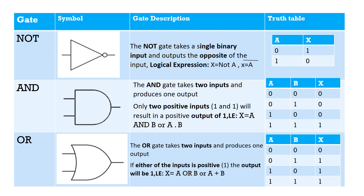This is the truth table of the NOT gate. A is my input, X is my output. If we give 0, then we get 1. If we give 1, then we get 0.